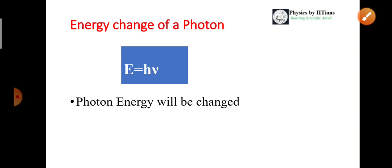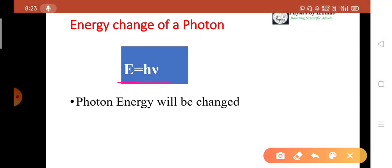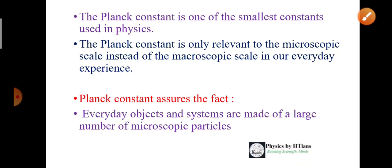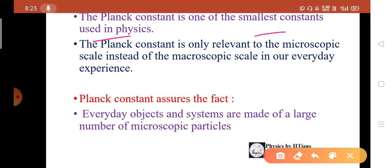The energy of the photon is E equals to hν, so this photon energy will also get changed. Now, what is Planck constant? Planck constant is one of the smallest constants used in physics. The Planck constant is only relevant in the microscopic scale instead of the macroscopic scale in our everyday experience.